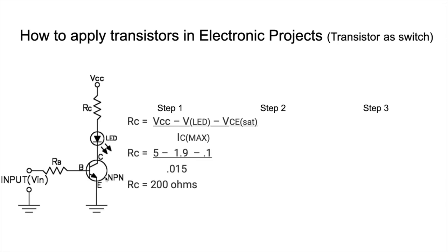Out of the three modes, only two are used for transistor-as-switch: cutoff and saturation. We consider the transistor in saturation for the on condition, meaning voltage and current flow will be present.